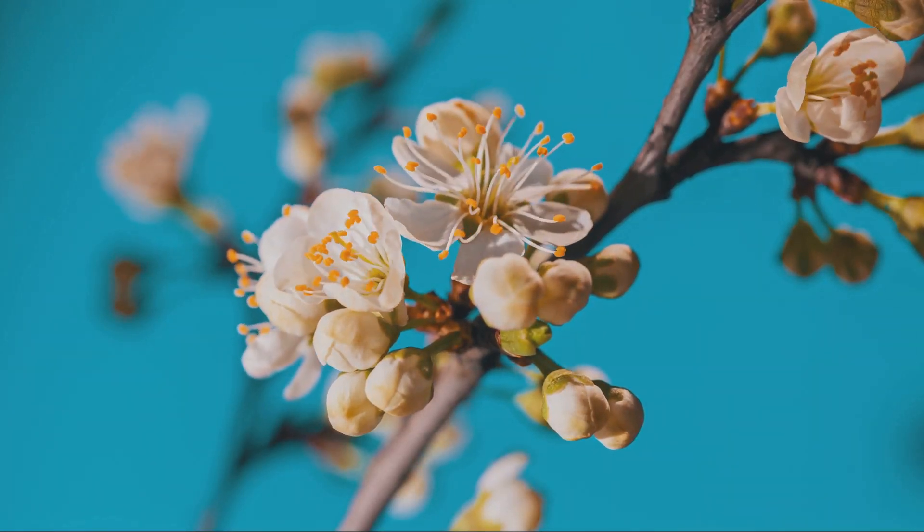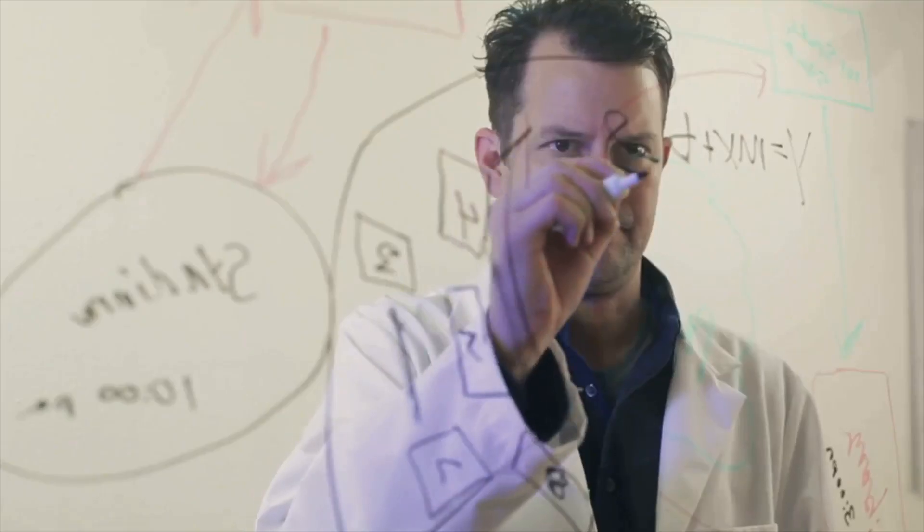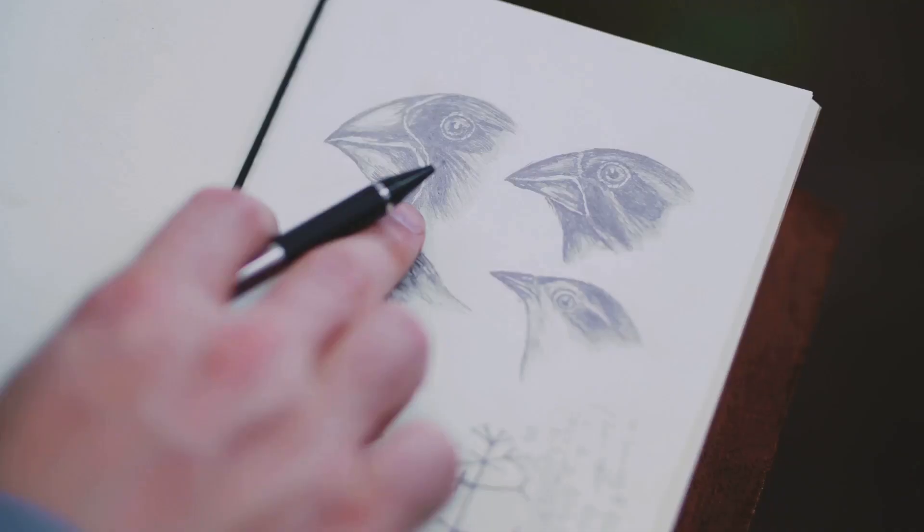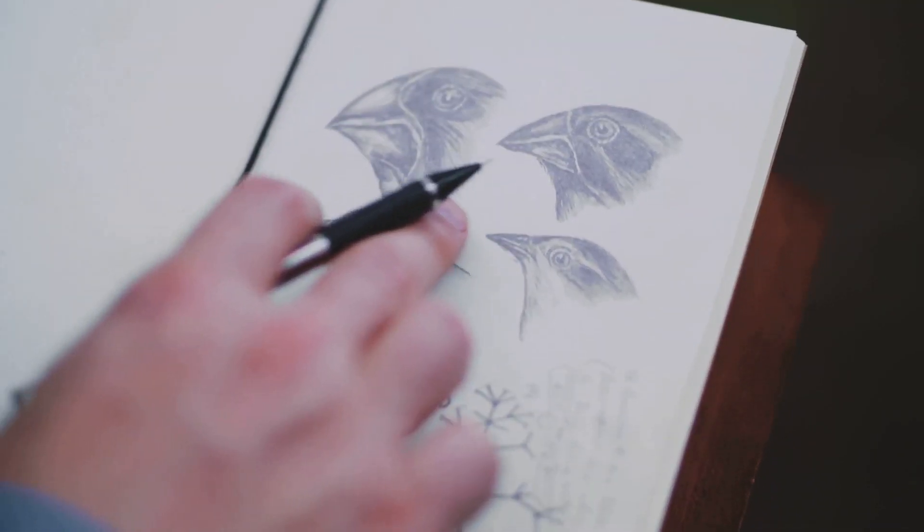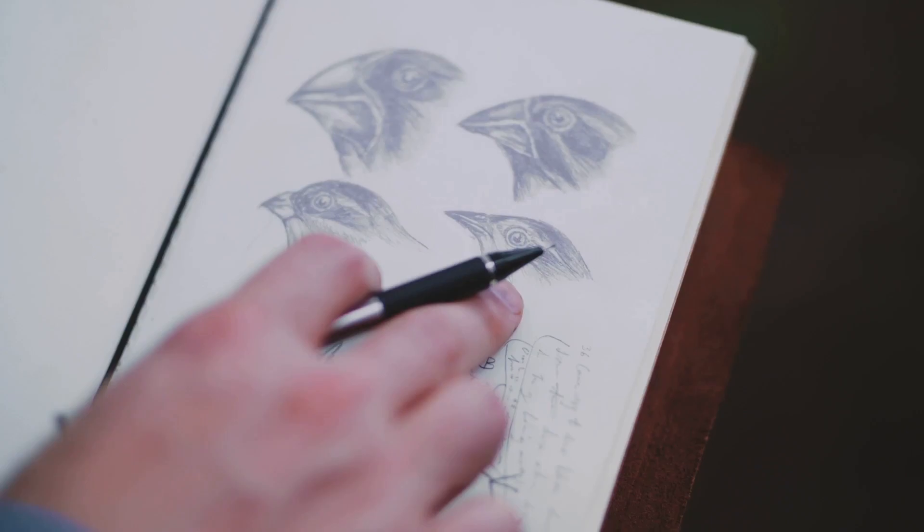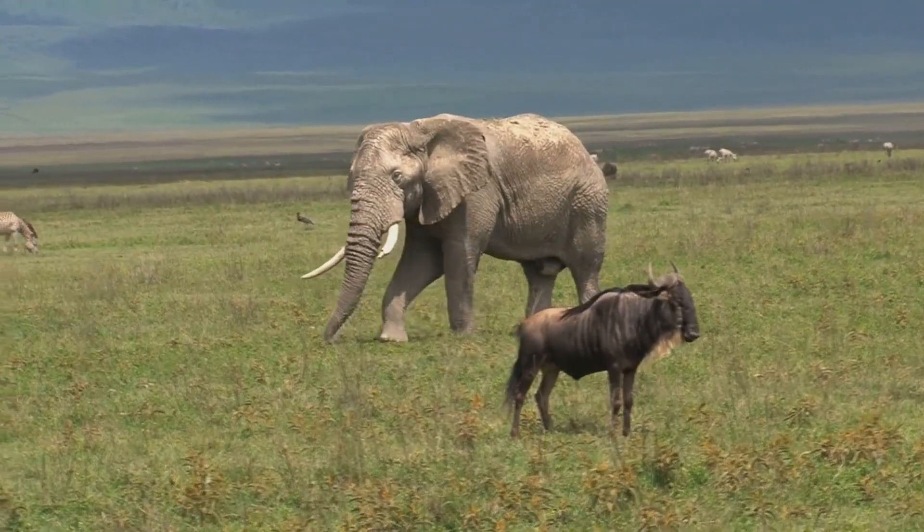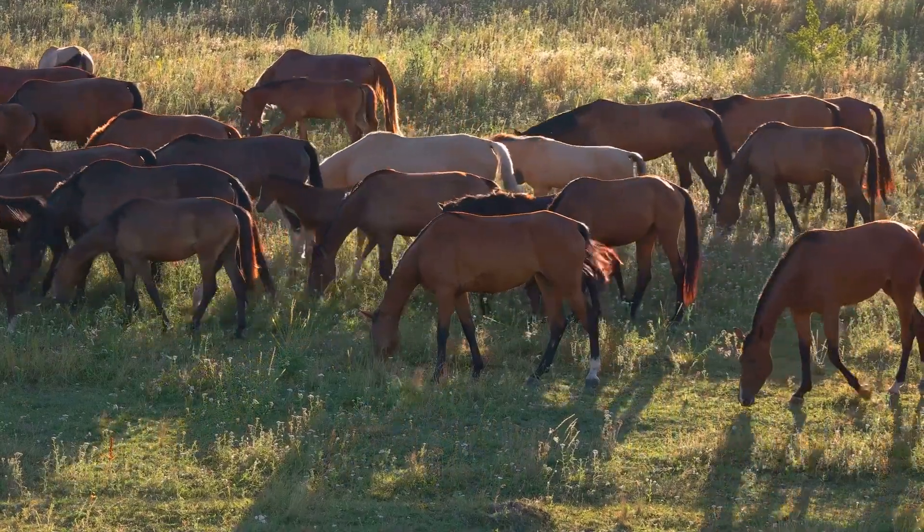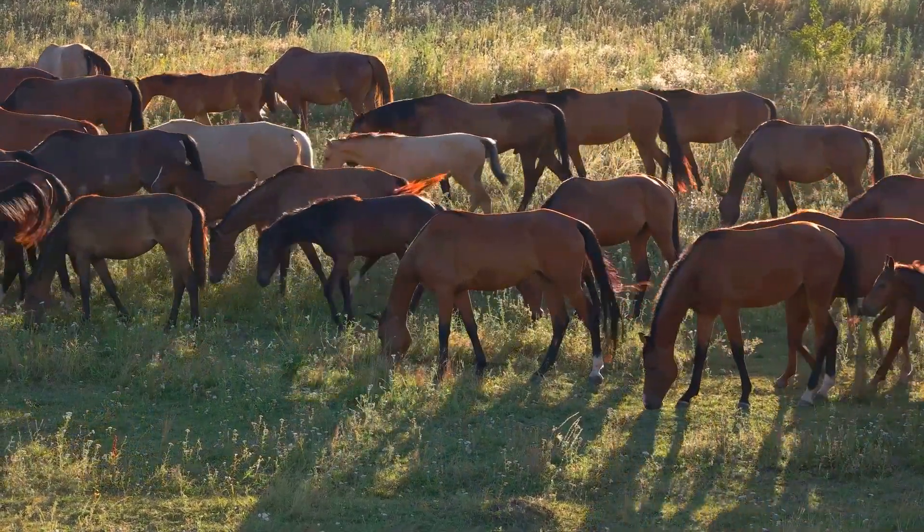He suggested that all species, including humans, evolved over time from common ancestors through a process he called natural selection. This means that organisms that are better adapted to their environment are more likely to survive and reproduce, passing on their advantageous traits to their offspring.